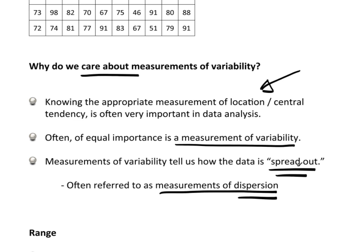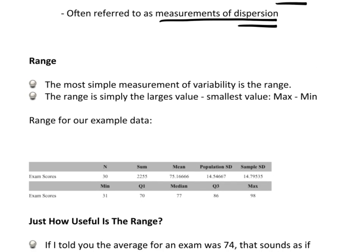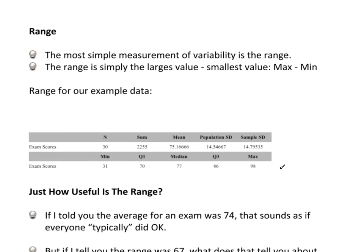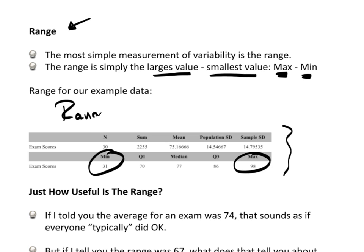So being able to measure, describe, and work with variability is actually an extremely important thing. Let's start off with probably the easiest measurement of variability or how data is spread out, and that being the range. The range is really the simplest measurement of variability. The range is really nothing more than take the largest value and subtract from it the smallest value, so you take your max and your min. For that data that I just showed you in TC stats, I used the summary statistics. I can see my minimum is 31, my maximum is 98, so my range will be 98 minus 31, which would be 67.